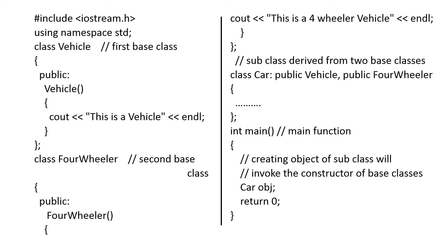Here is the example. The class name is Vehicle — Vehicle is the first base class. A constructor is used as the member function. As we know, when the name of the class and the name of the member function are the same, it is a constructor. So vehicle prints 'This is a vehicle.' Another base class is FourWheeler, which prints 'This is a four-wheeler vehicle.' So there are two base classes: Vehicle and FourWheeler.